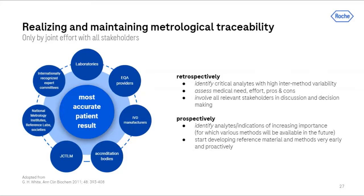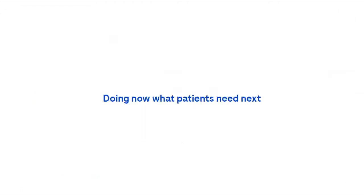To summarize, metrological traceability can only be achieved in a joint effort. IVD manufacturers depend on the availability of reference materials and methods, and committees and working groups for standardization depend on IVD manufacturers to assess and confirm the feasibility of the respective approach. In case of retrospective standardization, the key steps are to identify critical analytes, assess the medical need, and involve all stakeholders. In case of prospective standardization, it is all about making reference materials and methods available. As this is not always straightforward and the value of IVD products is steadily increasing, a close exchange between all stakeholders might be crucial to identify focus areas with the highest need and urgency. Thank you very much for your attention.